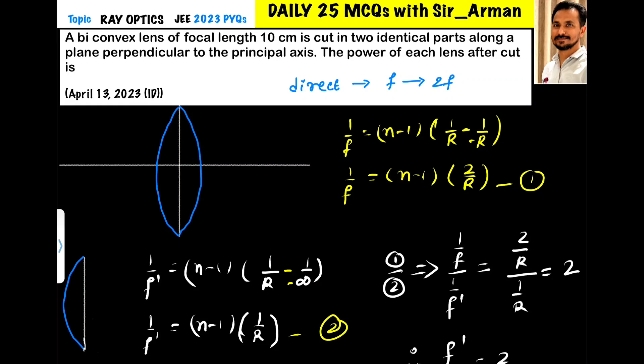A biconvex lens of focal length 10 centimeter is cut into two identical parts along a plane perpendicular to the principal axis. The power of the lens after cut is: See, whenever you cut the lens from vertical direction, what will happen? Its focal length will be double, and the power will become half.